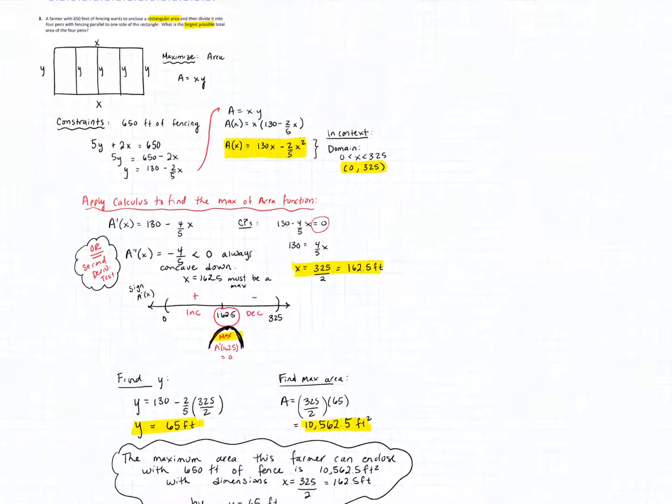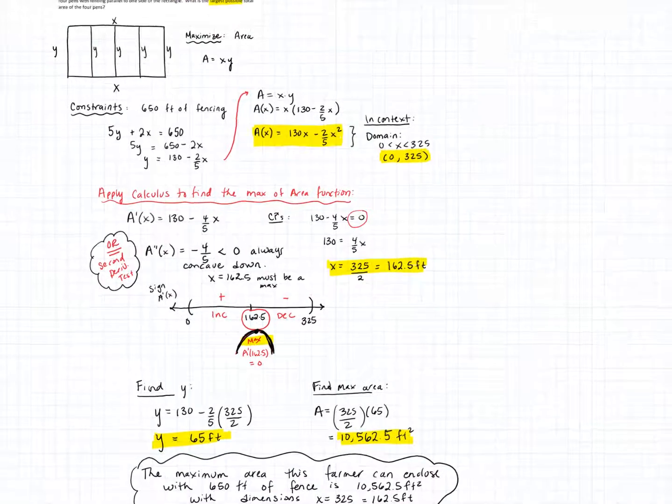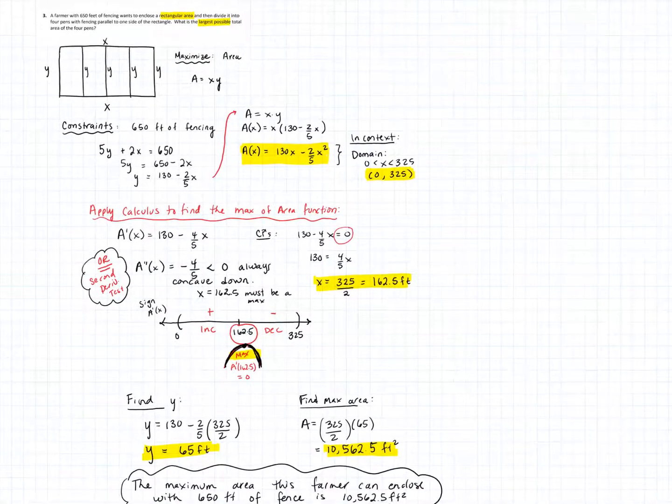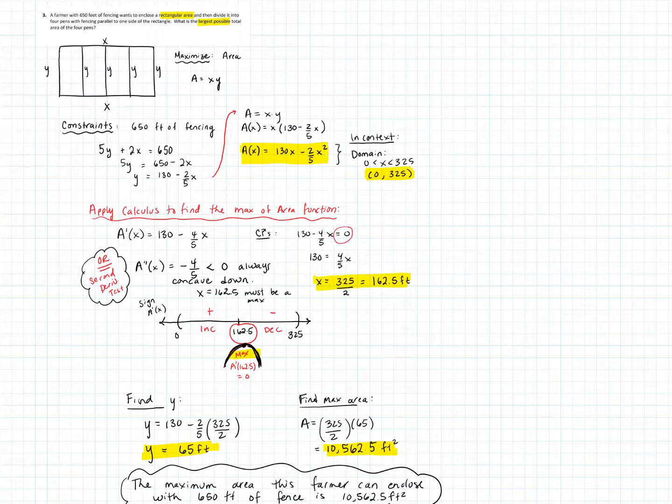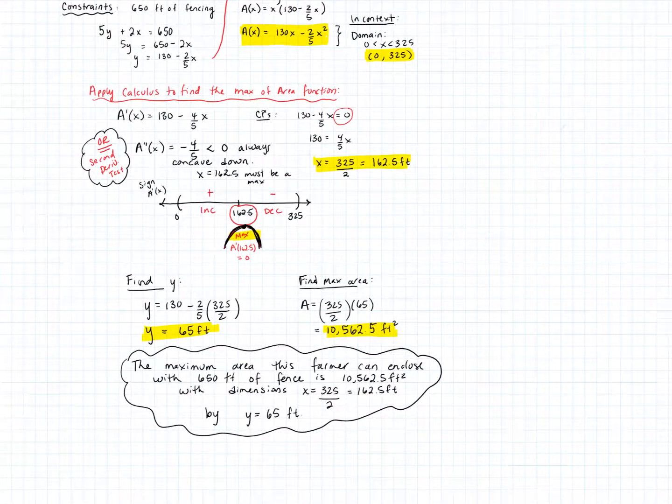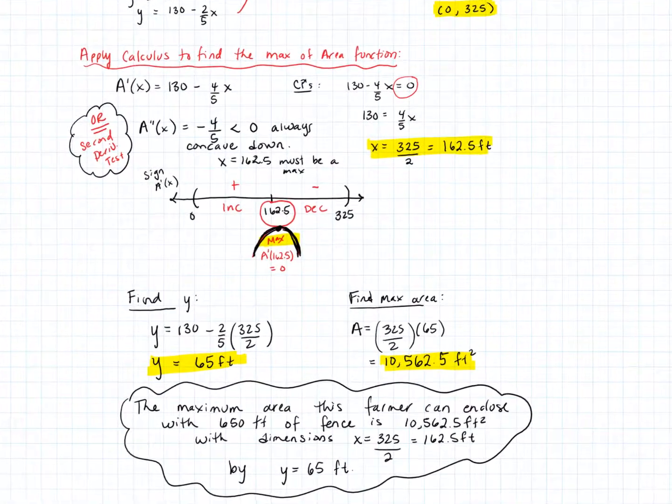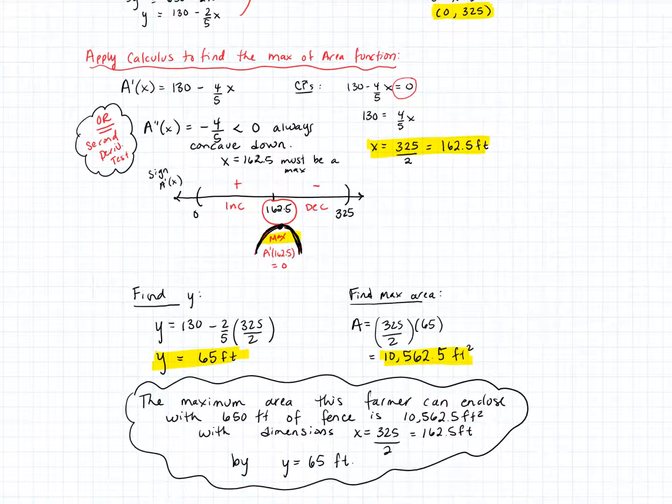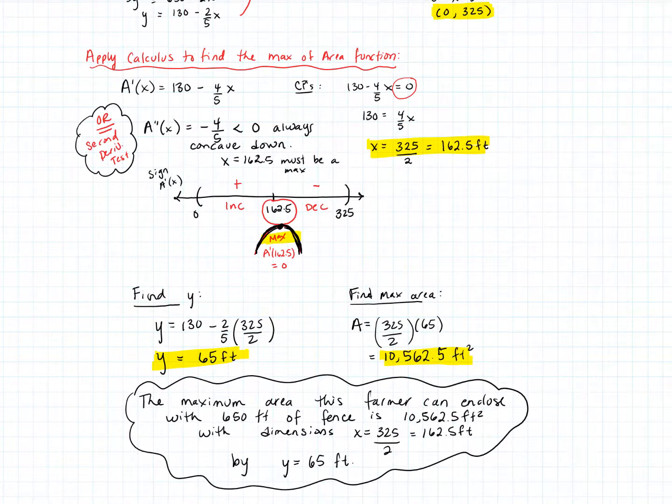And there is our answer and all of our justification. So we took our, so we followed our process. We drew a picture because this one did actually lend itself nicely to a picture. So, we drew a picture, created the optimizing equation, the objective function that we were looking at. First, we started with an equation and then used the constraint to create a function of a single variable, looked at its domain, and it did have some restrictions on its domain, and spent a little time talking about that, and then applied some calculus to find that actual maximum by taking the derivative and then looking at that point. And you do have to justify that that point is a maximum. Okay. That's another example.